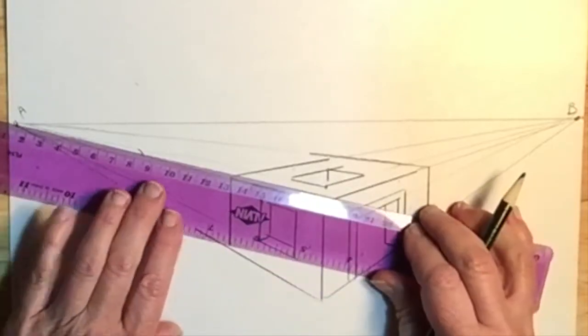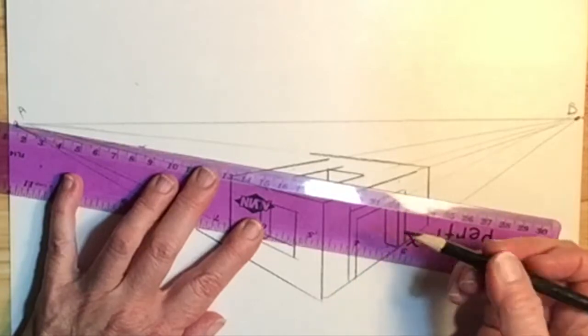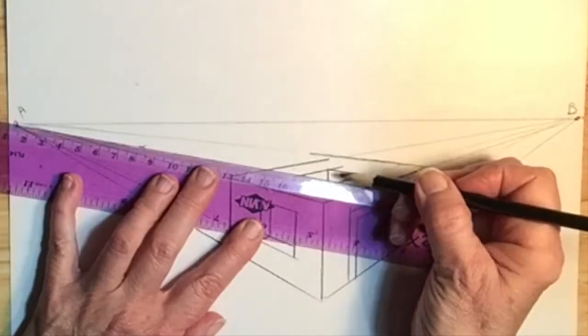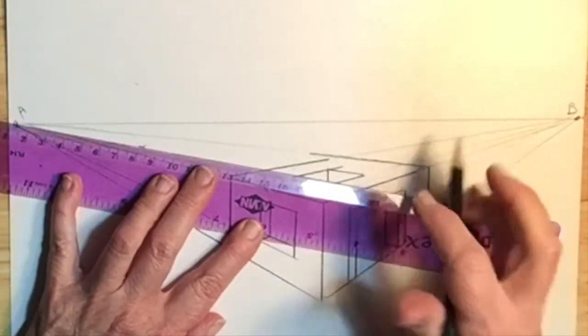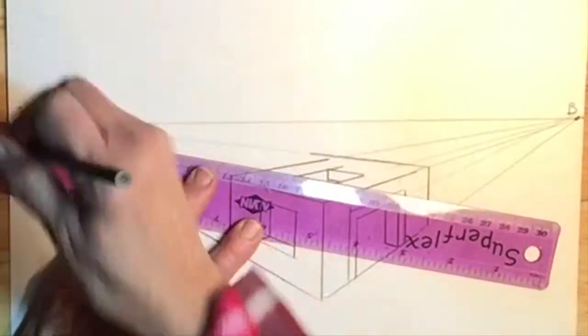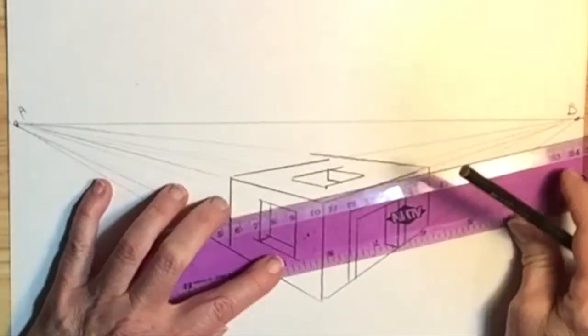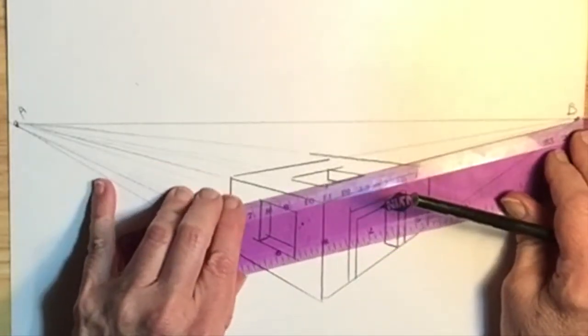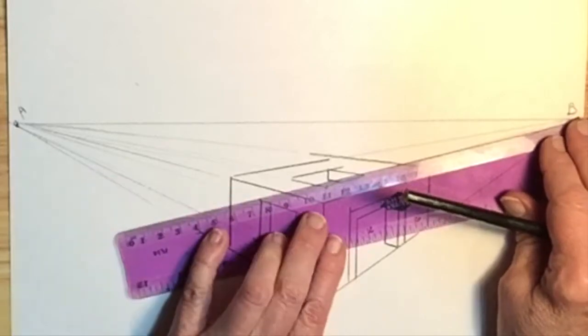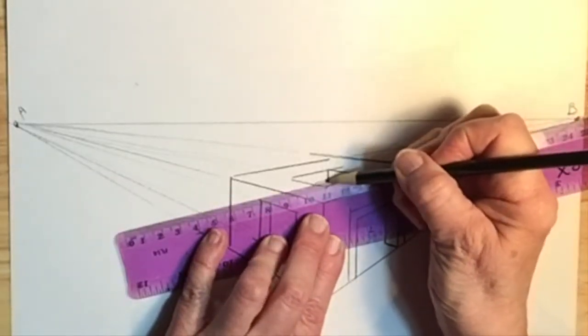And then I'll draw from A to the vertical line. It's not very long. And then I'll draw a line to B from that little vertical line. And there you have it, a three-dimensional looking opening on the top.